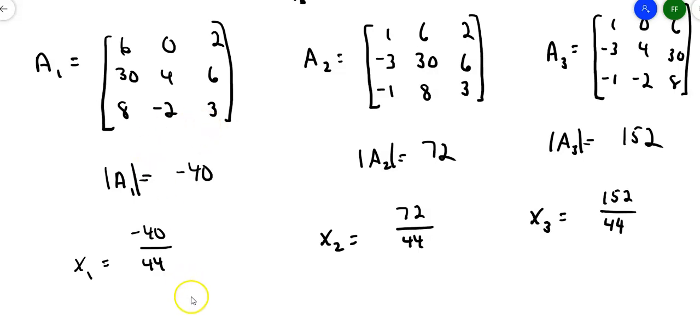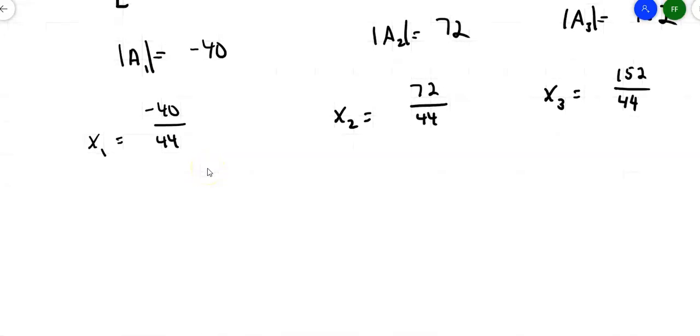Do these things simplify? Sure. Turns out they all do. The X sub 1, if I take a 4 out of top and bottom, becomes negative 10 over 11. Take a 4 out of top and bottom here, and I get 18 over 11. Take a 4 out of top and bottom here, and I get 38 out of 11.